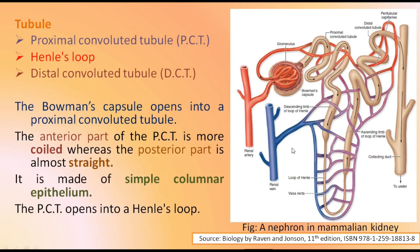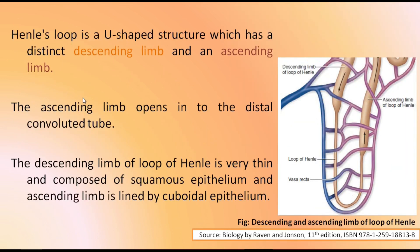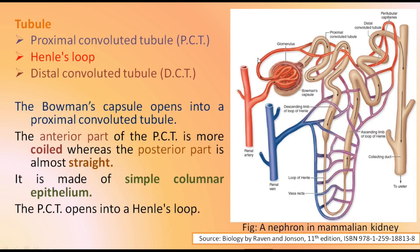The tubule portion of the kidney is divided into three parts: the proximal convoluted tubule, the Henle's loop, and the distal convoluted tubule. The Bowman's capsule opens into the proximal convoluted tubule, which is a convoluted tube-like structure that is the first part of the tubule. The anterior part of the proximal convoluted tubule is more coiled, whereas the posterior part is almost straight. The proximal convoluted tubule is made up of simple columnar epithelium, and it opens into the loop of Henle.